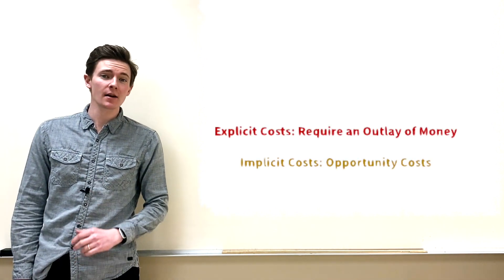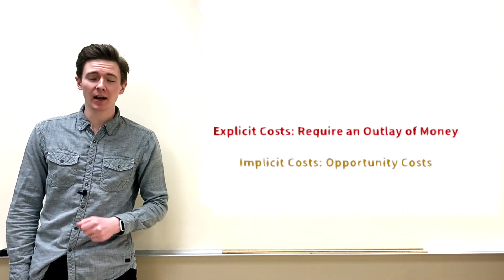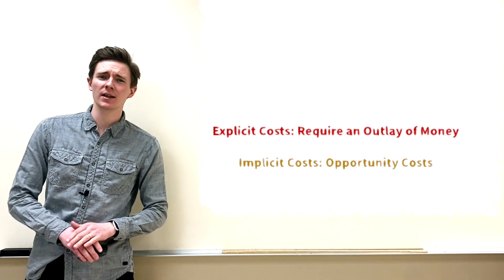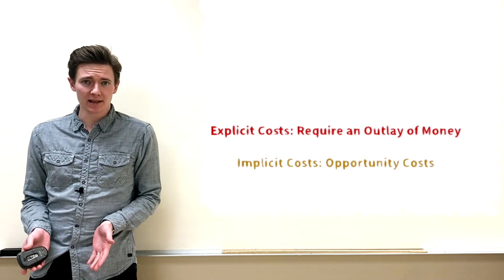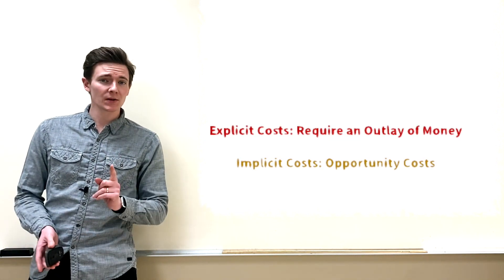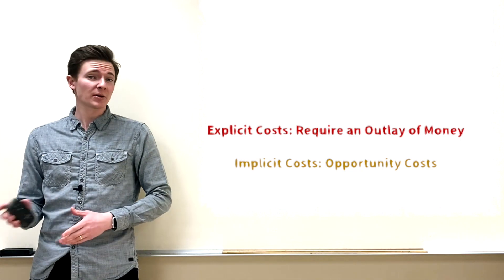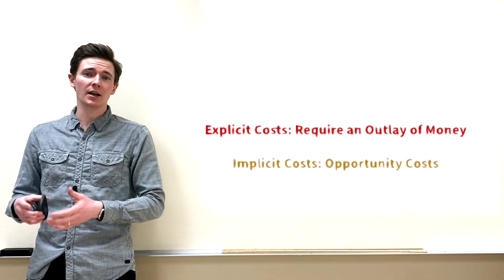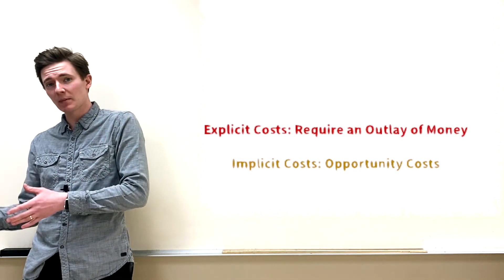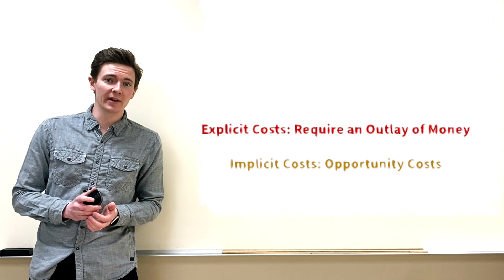Explicit costs are the costs that require an outlay of money — you can see that money leaving a business. Versus implicit costs, which are opportunity costs — you can't see how that money otherwise would have been spent or what other opportunities were available.